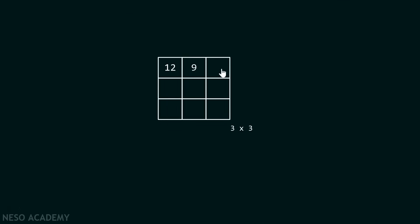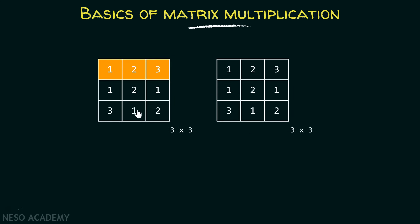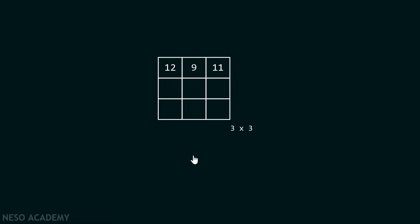Similarly, we can fill the next cell as well using the same procedure. In order to fill this cell, we first identify its location — first row and third column. Therefore, we will take the first row from this matrix and the third column from this matrix, and again perform the same procedure. The result comes out to be 11.